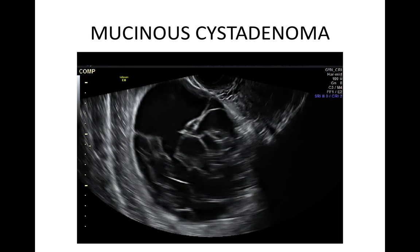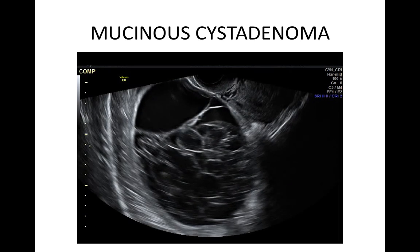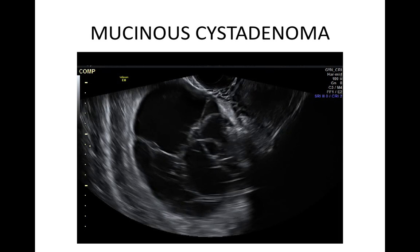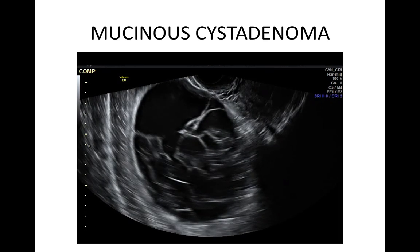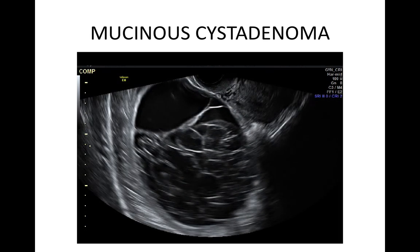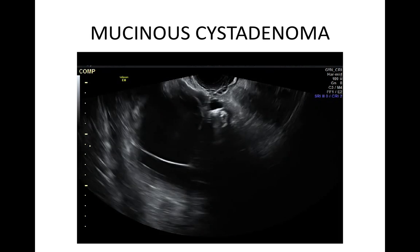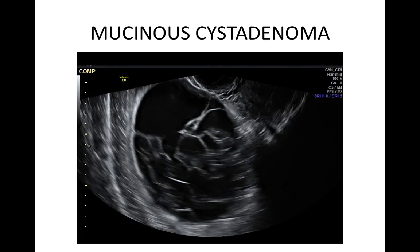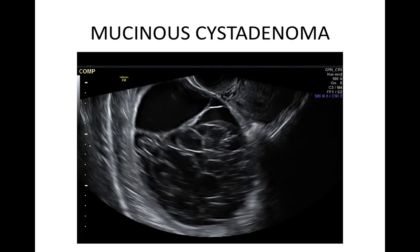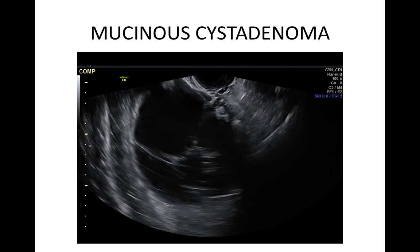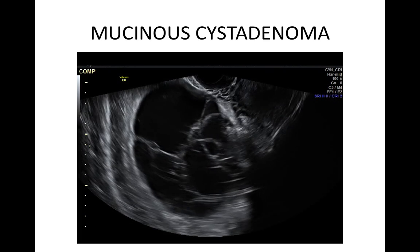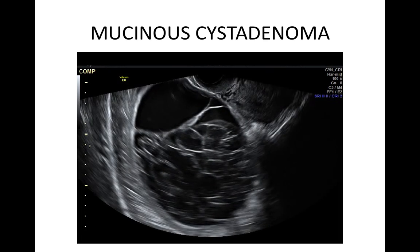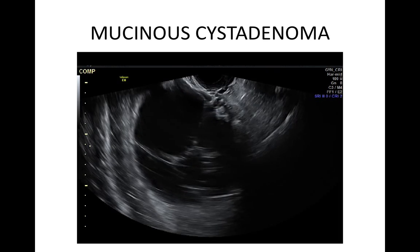Mucinous cystadenomas are mainly multilocular cysts and can have more than 10 locules. There is no solid material and the cyst wall is regular. The cyst contents are of low-level echogenicity and this may vary between locules. Vascularity is usually minor and there can be some shadowing. Some of these cysts are very large.